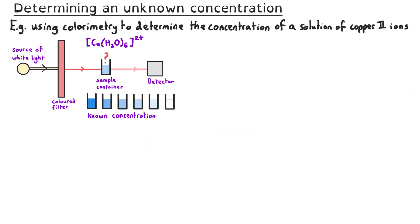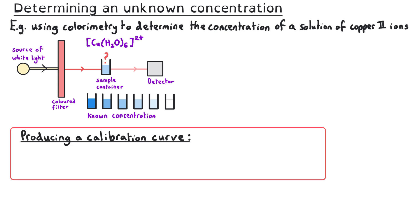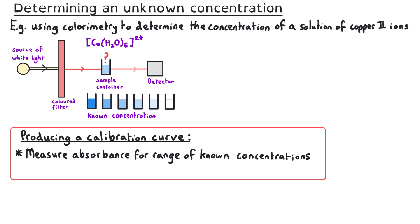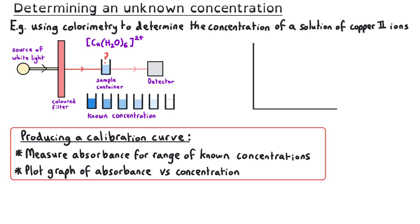You need to be able to describe how colourimetry can be used to determine an unknown concentration, for instance a solution containing copper ions. To do this, the first stage involves the production of a calibration curve. To produce a calibration curve, we measure the absorbance for a range of known concentrations and then plot a graph of absorbance versus concentration.